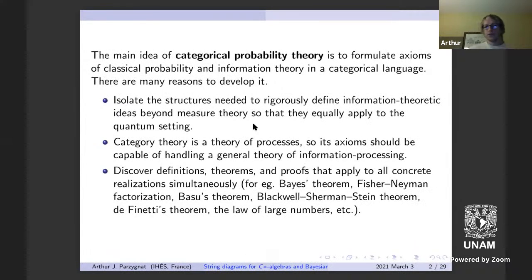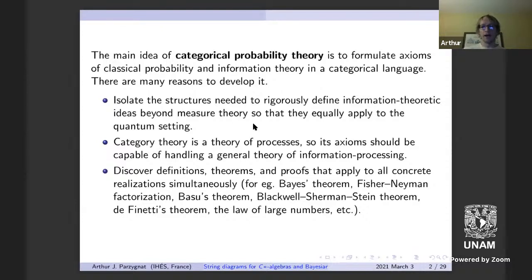We'd like to isolate the structures needed to rigorously define these ideas, specifically ones that don't necessarily involve measure theory. Because category theory is a theory of processes, its axioms should be capable of handling a general theory of information processing. We'd like to discover definitions, theorems, and proofs that apply to all realizations of these different categorical contexts.